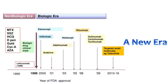Looking at the timeline: in the non-biologic era we had methotrexate, sulfasalazine, hydroxychloroquine, D-penicillamine, gold, cyclosporine A, and azathioprine. Then in 1998 leflunomide came, in 2000 infliximab, anakinra in 2001, adalimumab in 2003, abatacept in 2005, rituximab in 2006, golimumab later, and then targeted small molecules — JAK kinase inhibitors — from around 2010 to 2016, including tofacitinib and baricitinib.